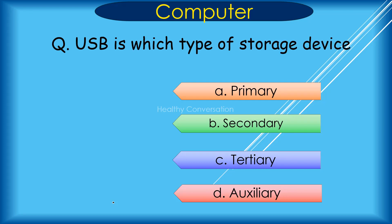Question: USB is which type of storage device? A. Primary, B. Secondary, C. Secondary, D. Auxiliary. Correct answer is B. Secondary.